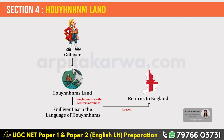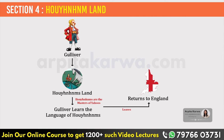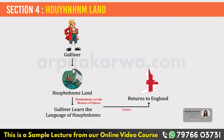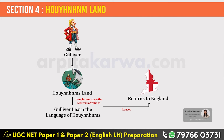Gulliver travels to a nearby island where he is picked up by a Portuguese ship and returned to England. Once he returns, he only sees other people as Yahoos and cannot tolerate being with them. He even refuses to let his wife and children touch his bread or drink from his cup. He desires to get back with the Houyhnhnms, and in his longing he starts talking to his two horses. With this adventure we come to the end of Gulliver's Travels.